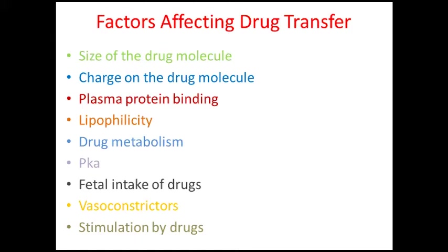The first factor is the size of the drug molecule. The bigger the size, the less likely it can cross the placenta — think of the placenta like a fence that won't allow bigger molecules to pass through. Examples include heparin and insulin, which have high molecular size. Drug molecules with a molecular weight greater than 1000 daltons find it difficult to cross the placenta, while small molecules can cross very easily.